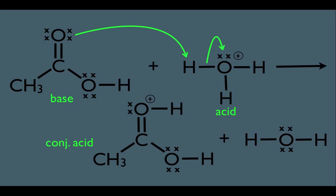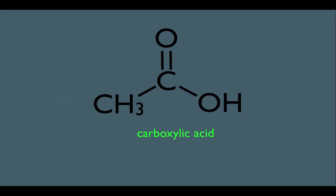As a side product we get H₂O. Looking at the accounting: the electrons on the oxygen of the carboxylic acid form this new bond, making that hydrogen from the acid now attached to the carboxylic acid. The electrons in the red box jumped up onto the oxygen and now exist as a lone pair. The pKa of the conjugate acid here is negative 6.1, meaning this molecule is very acidic.